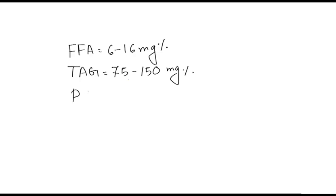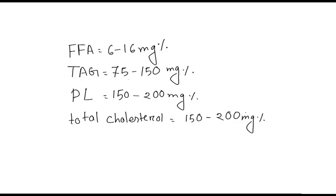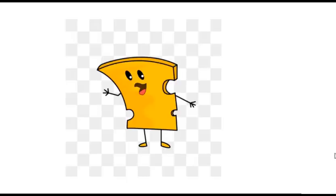Finally, the end product of fat digestion has reached the blood. These constitute the plasma lipids which are free fatty acid 6 to 16 mg%, triacylglycerol 75 to 150 mg%, phospholipid 150 to 200 mg%, and total cholesterol 150 to 220 mg%. So this is how your favorite cheese is digested and absorbed and finally reaches in your blood.